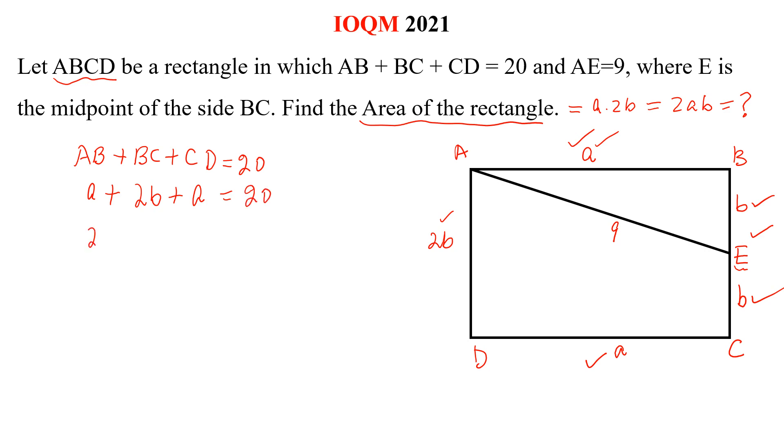Simplify this. 2 into A plus B is equal to 20 and A plus B is equal to 10.